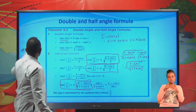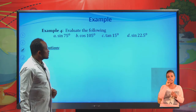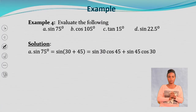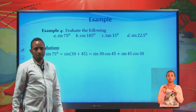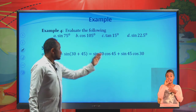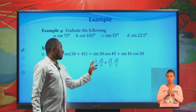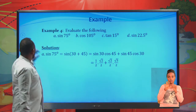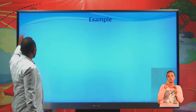Now let's apply these formulas. Evaluate sine 75 degrees, cosine 105 degrees, tan 15 degrees, and sine 22.5 degrees. For sine 75, we write it as sine of 30 plus 45. Using the formula: sine 30 cosine 45 plus sine 45 cosine 30. This gives 1 over 2 times root 2 over 2, plus root 2 over 2 times root 3 over 2, which simplifies to root 2 over 4 plus root 6 over 4.